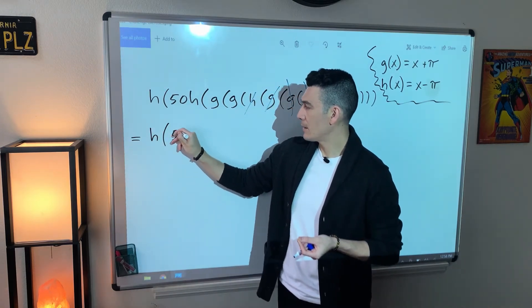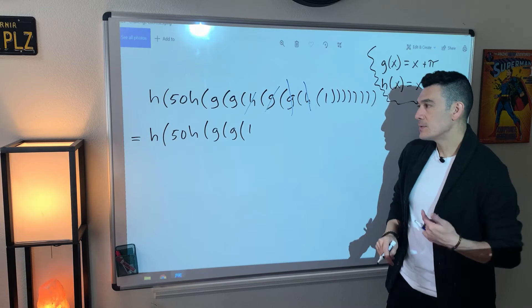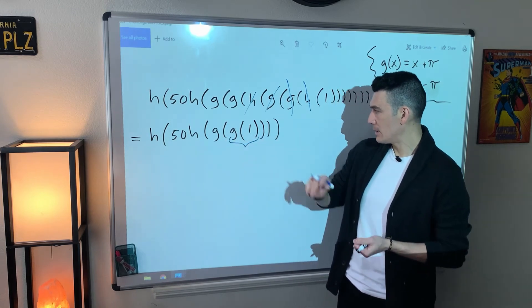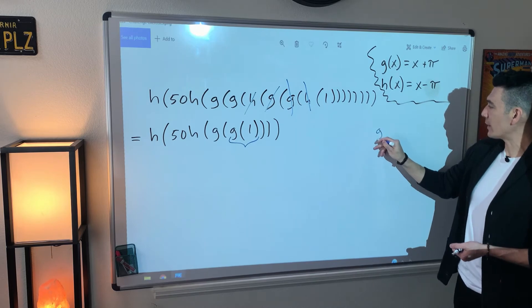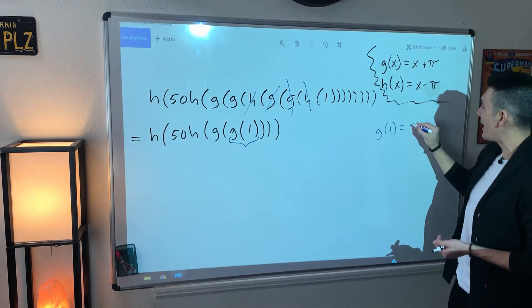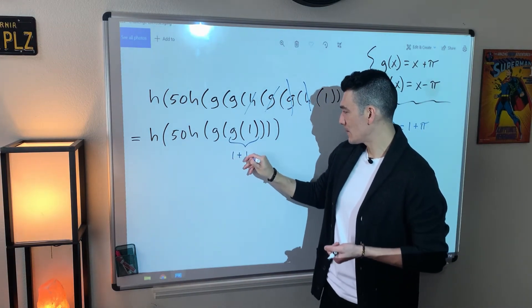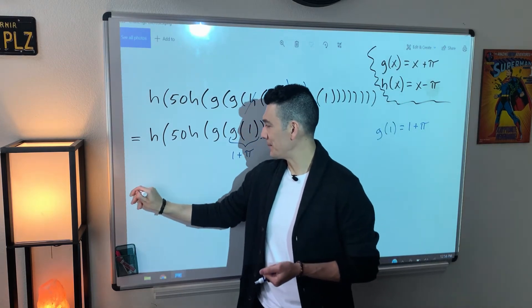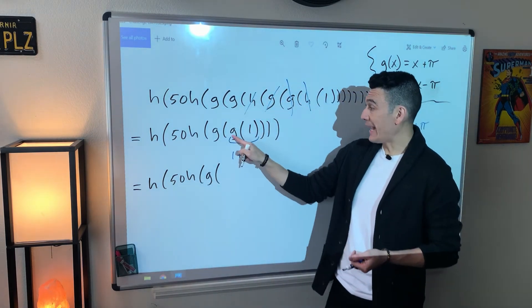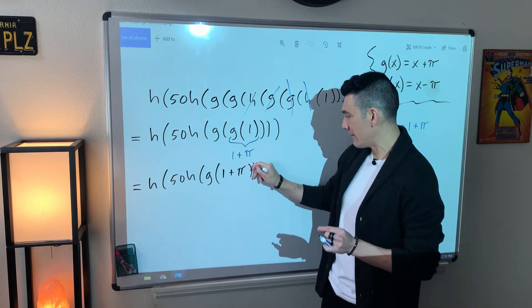So let's refresh this. So we have h, 50h, then I have a g and a g, and the blue stuff is all gone, and it's just one. So now we have four doors to close. And let's work here inside out. Let's focus on g of one. So some quick scratch work. g of one is whatever you get when you plug one into g. If I plug one into g there, it'll be one plus π. One plus π. So that one plus π is what can replace g of one. So let's refresh this yet again. h, parentheses, 50h, g. And now that g of one is gone, and one plus π takes its place.